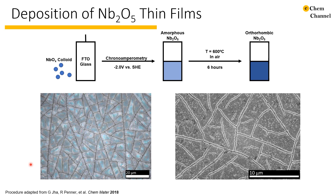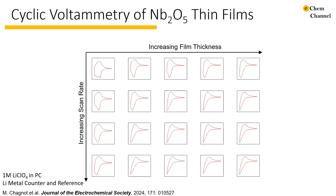We then heat at 600°C to transform the film from amorphous to the orthorhombic phase. This heat treatment and drying results in a cracked morphology, which can be seen here in the optical microscope and SEM images. Once we deposited our thin films, we looked at the cyclic voltammetry response as a function of two main variables, film thickness and scan rate.